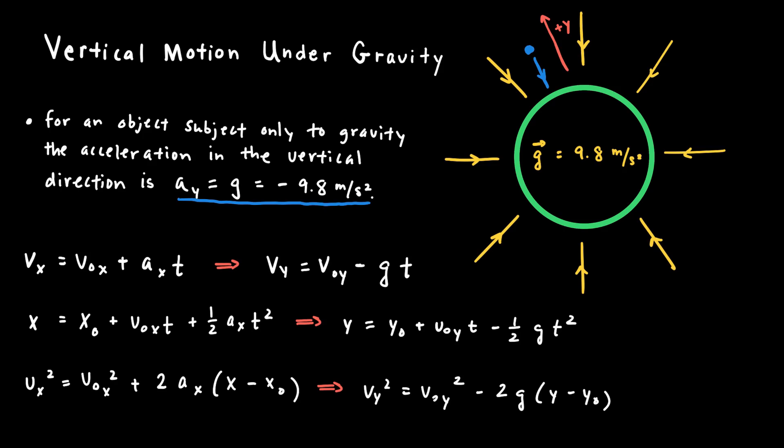What that means practically when we're solving a problem is our three kinematic equations can be modified a little bit when we know we're working in the vertical direction. In the first equation, instead of vx and v_naught_x, I write vy and v_naught_y to indicate the final and initial velocities in the y direction. Instead of writing a generic plus ax, I've written, more specifically, minus g.